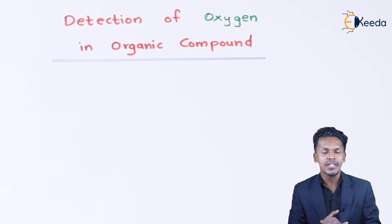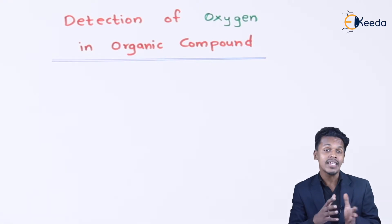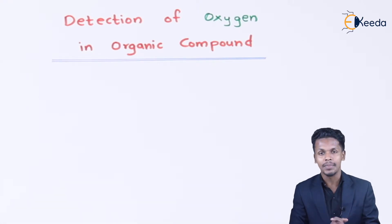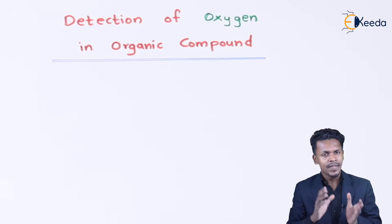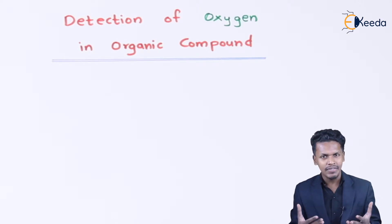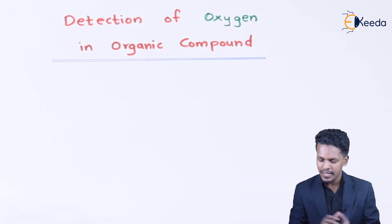It is very easy to detect the percentage of oxygen in an organic compound, but there are various methods to detect the percentage of oxygen. For that we have to follow certain steps.